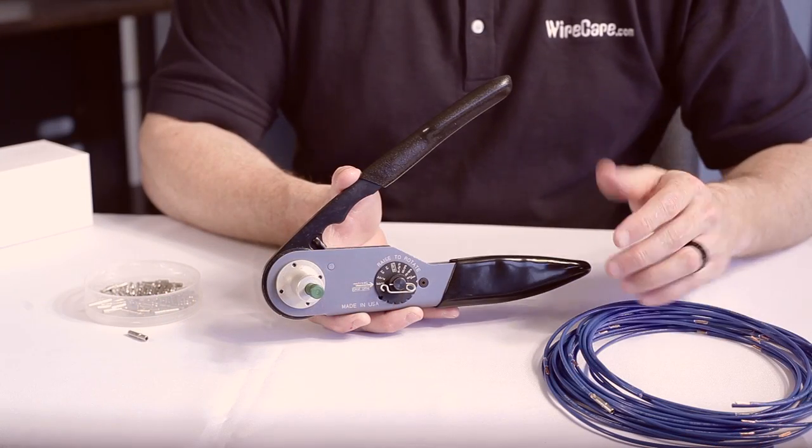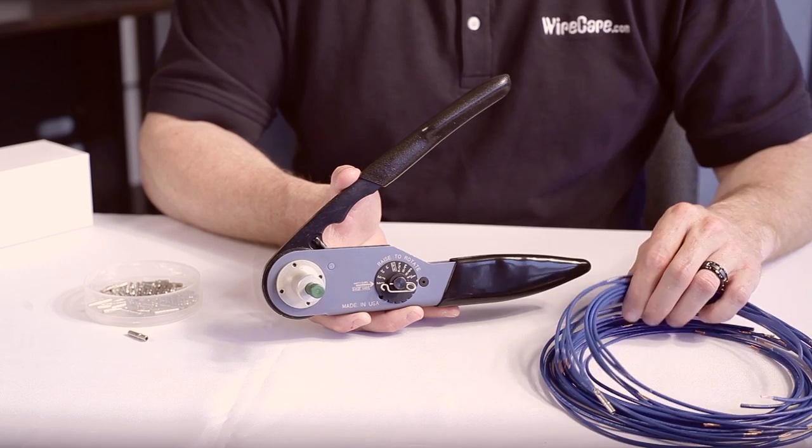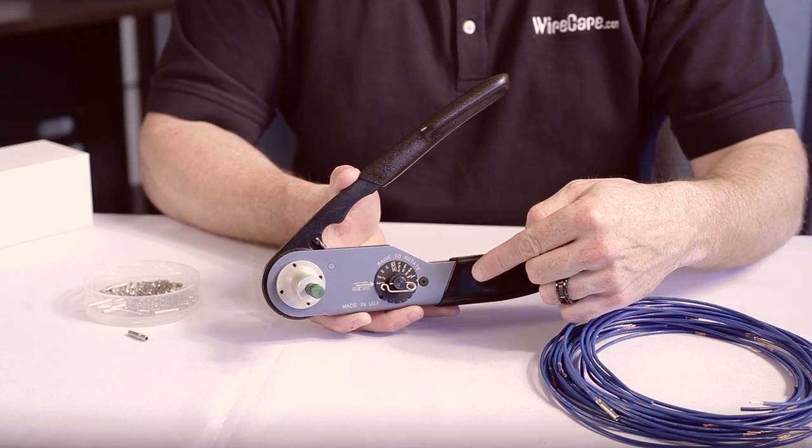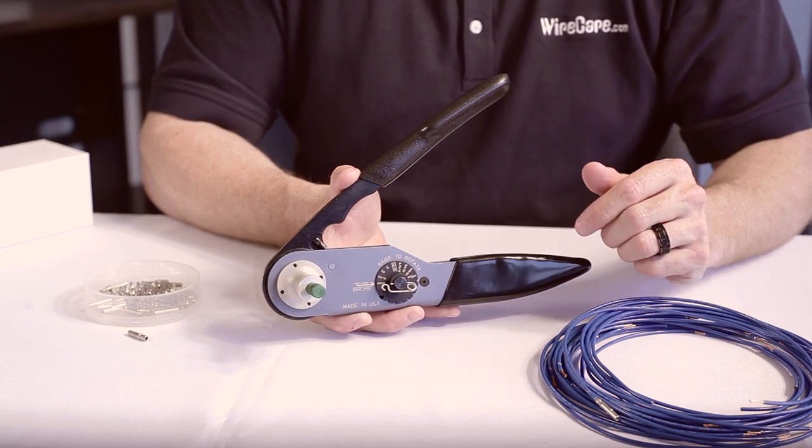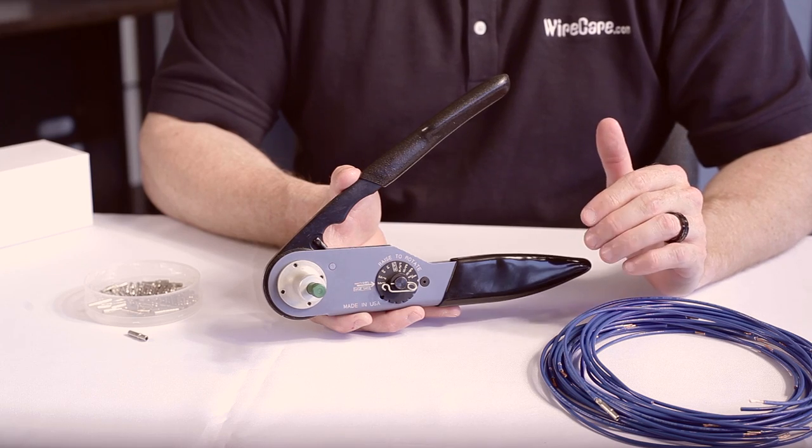If you'll be crimping several identical wires, you can put the locking pin back on the size dial to be absolutely sure that your setting won't accidentally change while you're working.